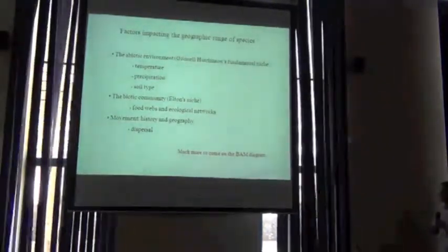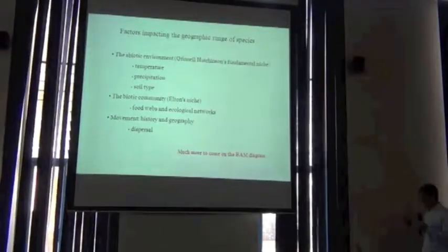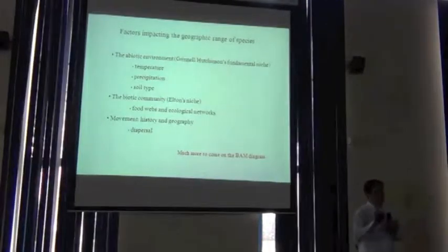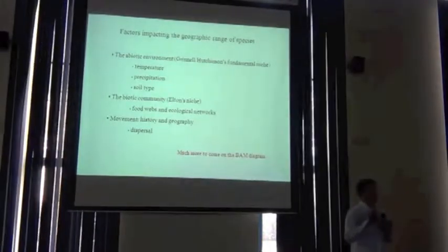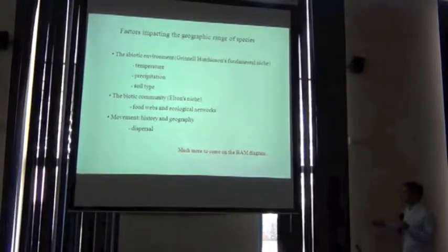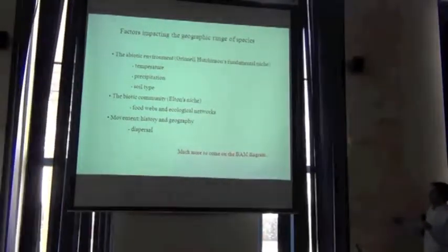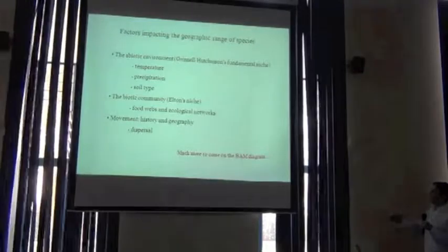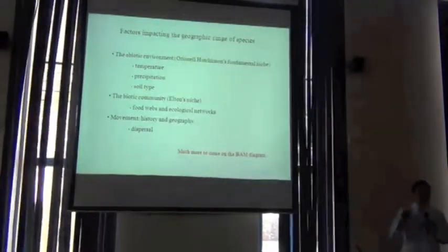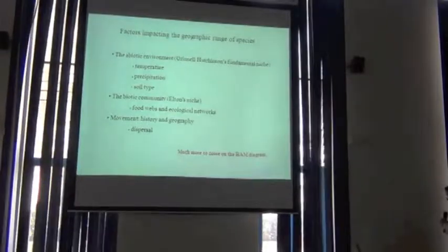We're going to hear a lot more about that. Tani is going to talk about a really neat framework that can be used — the BAM diagram — which formalizes this idea of the biotic, the abiotic, and movement as the three dimensions that influence geographic ranges of species.